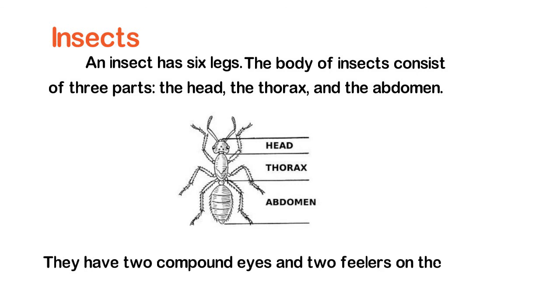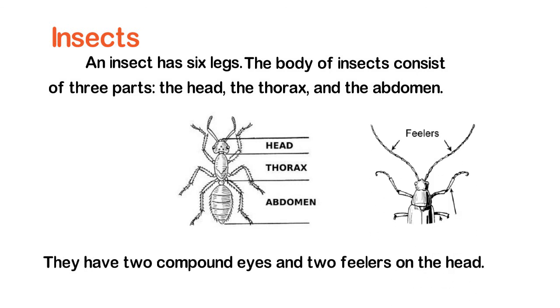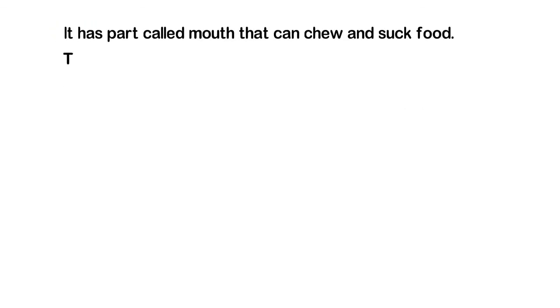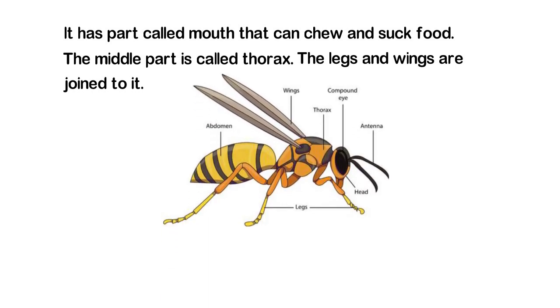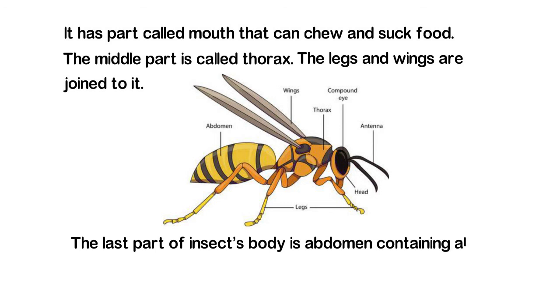Insects have two compound eyes and two feelers on the head. The mouth part can chew and suck food. The middle part is called the thorax, and the legs and wings are joined to it. The last part of the insect's body is the abdomen, which contains all the organs or working parts of the body.